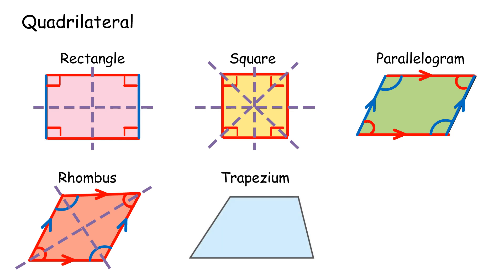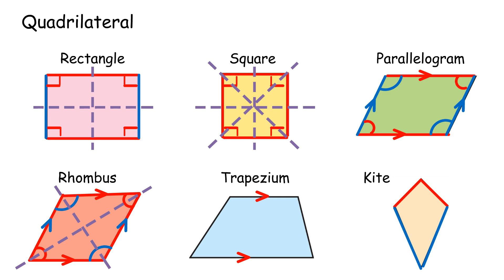Trapezium: only one pair of opposite sides is parallel, and it has no axis of symmetry. Kite: two pairs of adjacent sides are of equal length, one pair of opposite angles is equal, one diagonal is the perpendicular bisector of the other, one diagonal is the angle bisector of the angles at the vertices, and it has one axis of symmetry.